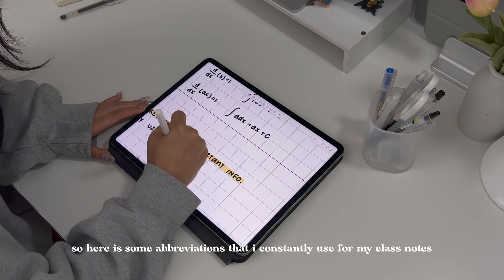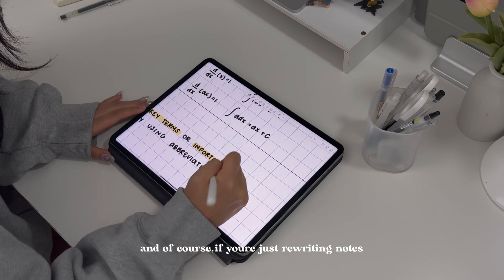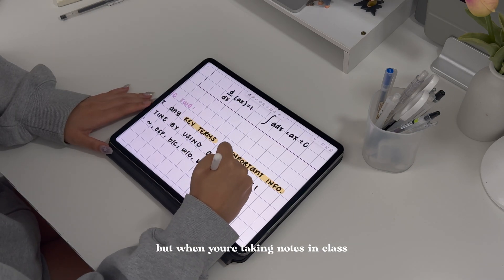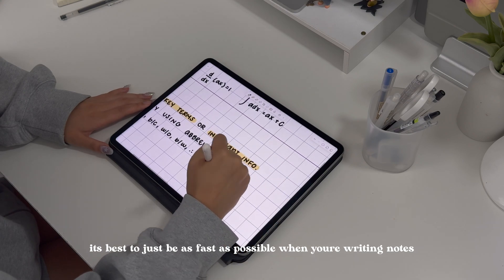Of course if you're just rewriting notes you can write it without the abbreviations, but when you're taking notes in class it's best to be as fast as possible when you're writing notes so you can have everything down.